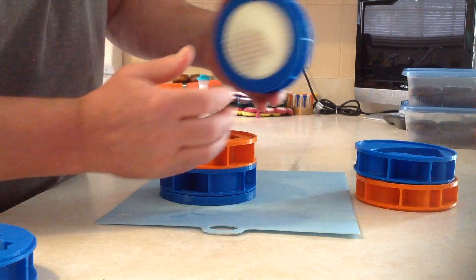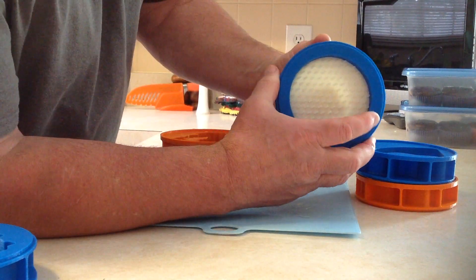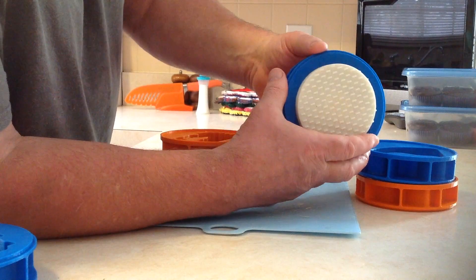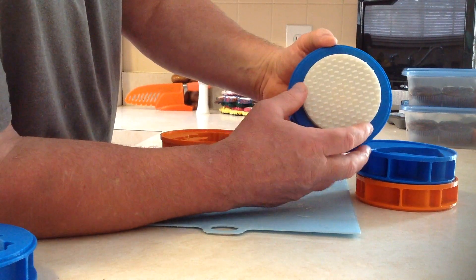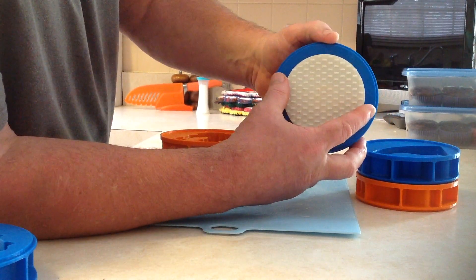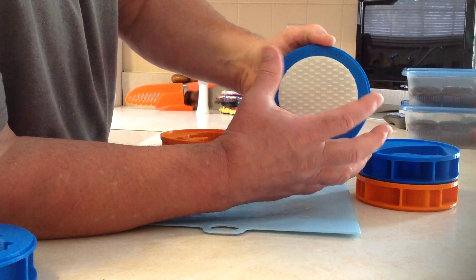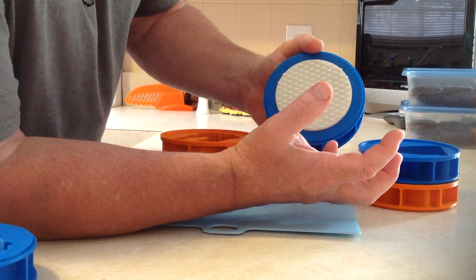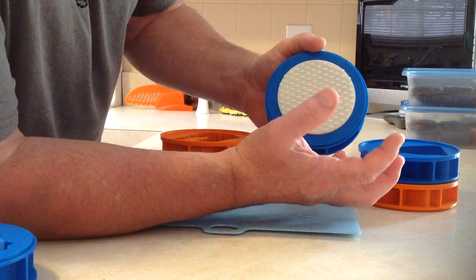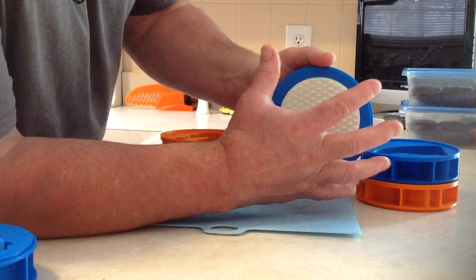The next mold is the Perfect Patty Shaper hamburger mold. This device here is called a cuber, and what it allows you to do is perforate the meat so that the vapor or the heat goes all the way through the meat and cooks it evenly.